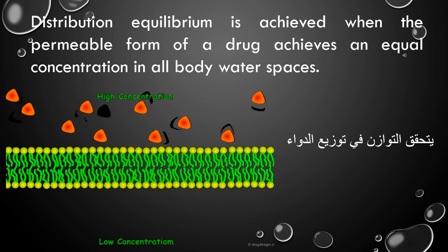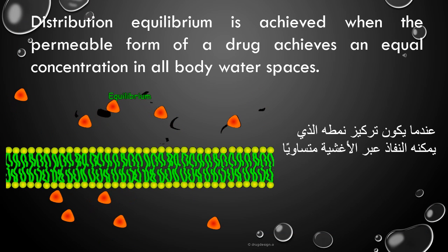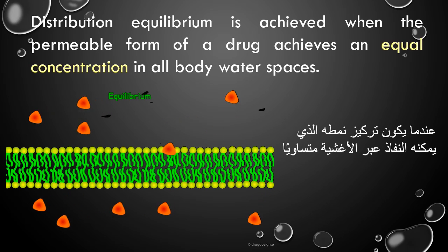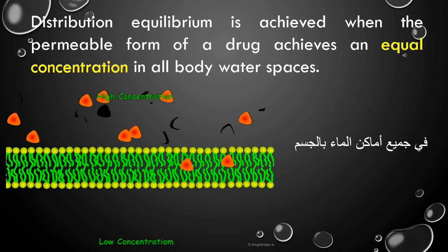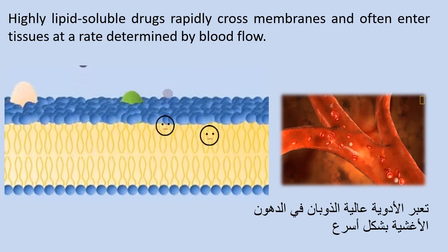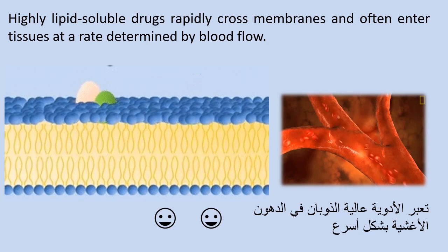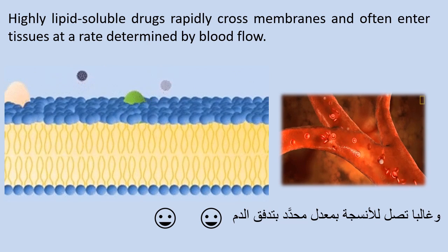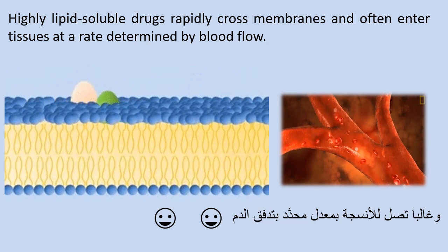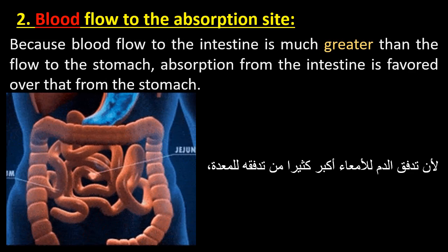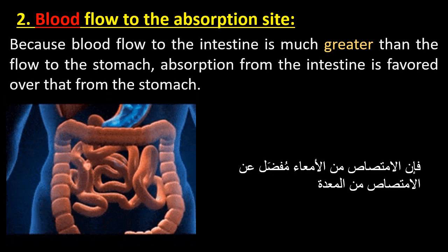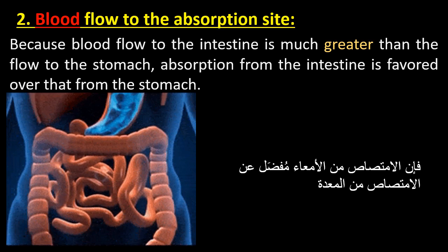Distribution equilibrium is achieved when the permeable form of a drug achieves an equal concentration in all body water spaces. Note that highly lipid-soluble drugs rapidly cross membranes and often enter tissues at a rate determined by blood flow to the absorption site. Because blood flow to the intestine is much greater than the flow to the stomach, absorption from the intestine is favored over that from the stomach.